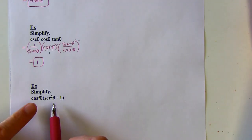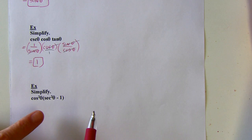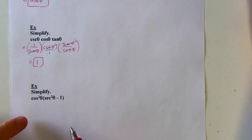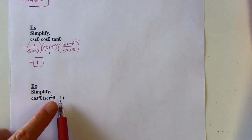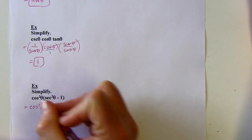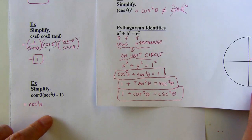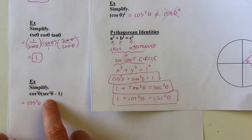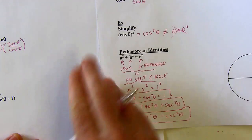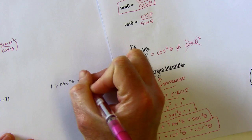Anytime I see a squared function, alarm bells go off and I think I'm probably going to use a Pythagorean identity — especially if there's a 1 added or subtracted to a squared term, like here. Writing in sine and cosine: I'll leave cosine squared alone and focus on secant squared. Looking at the Pythagorean identity involving secant: 1 plus tangent squared equals secant squared. I can rearrange this so that secant squared minus 1 is on one side.